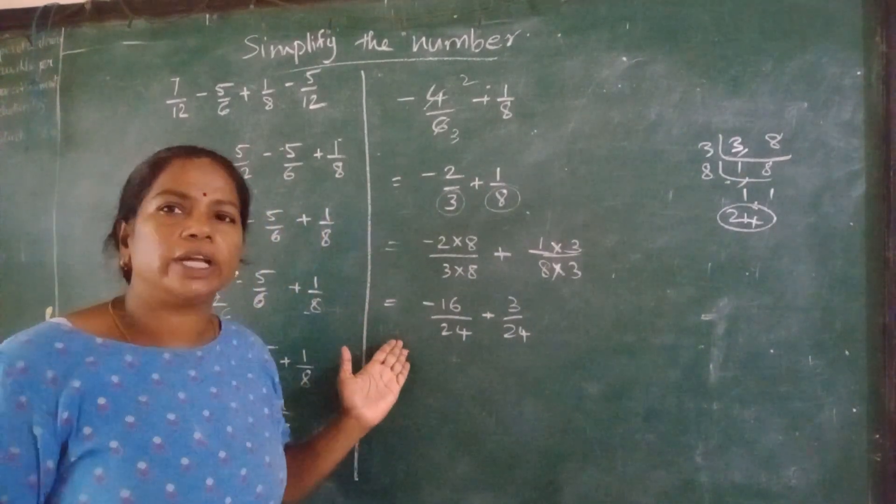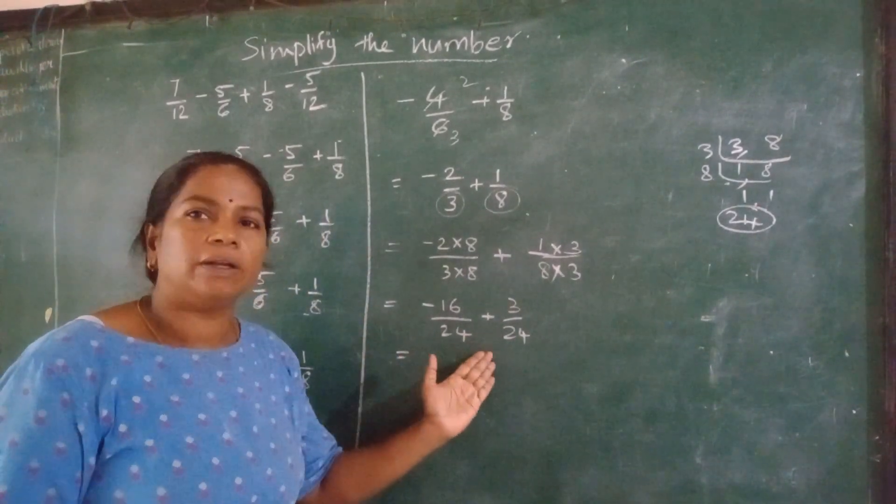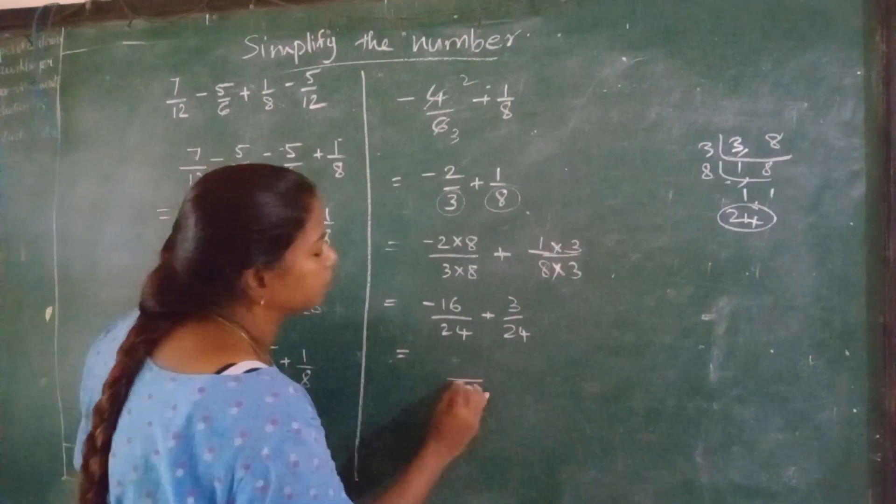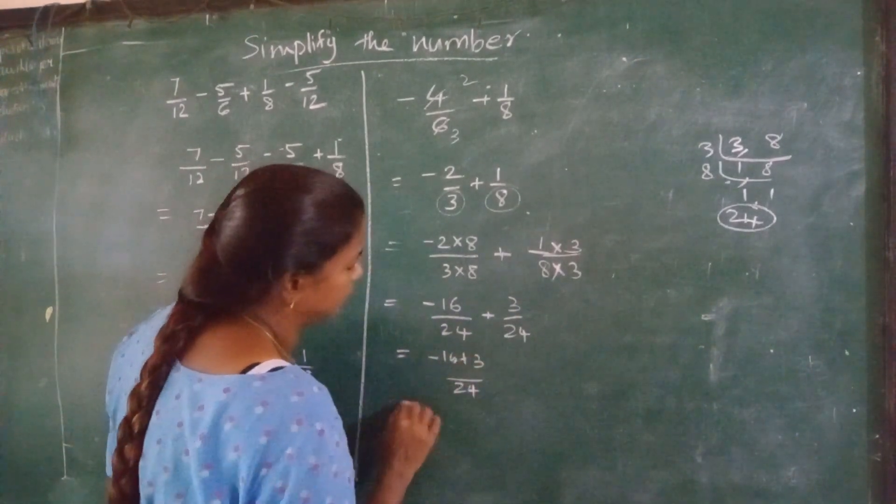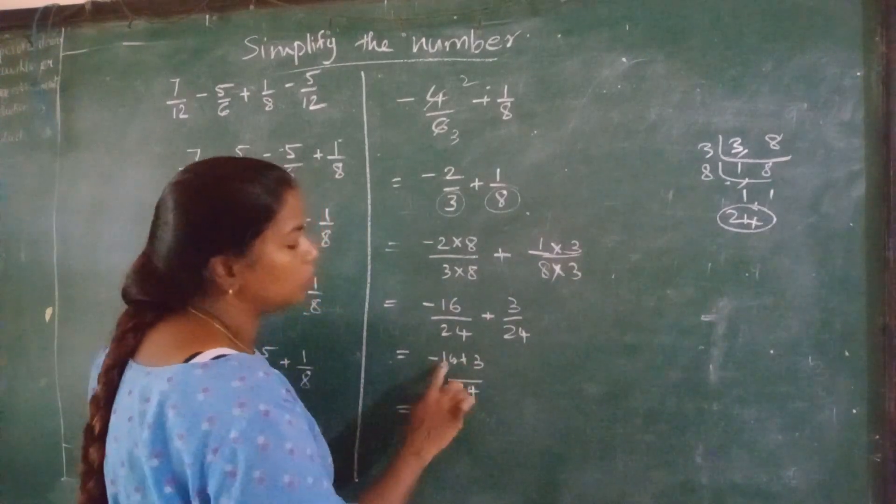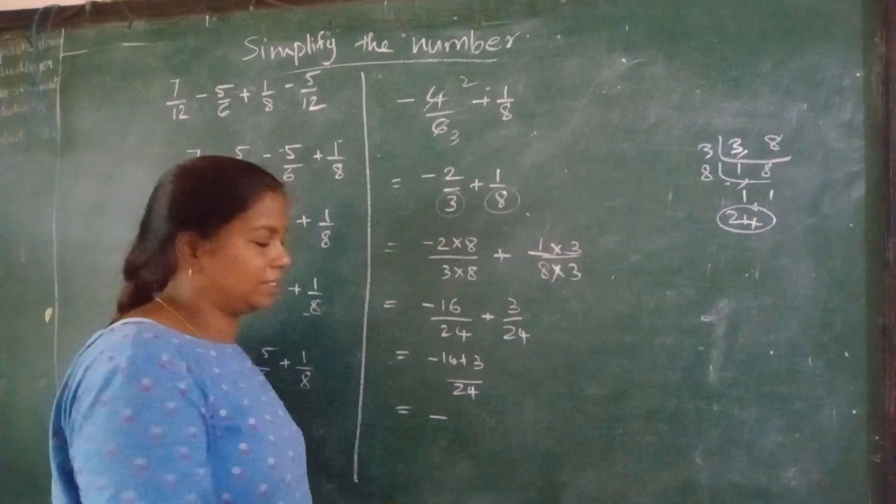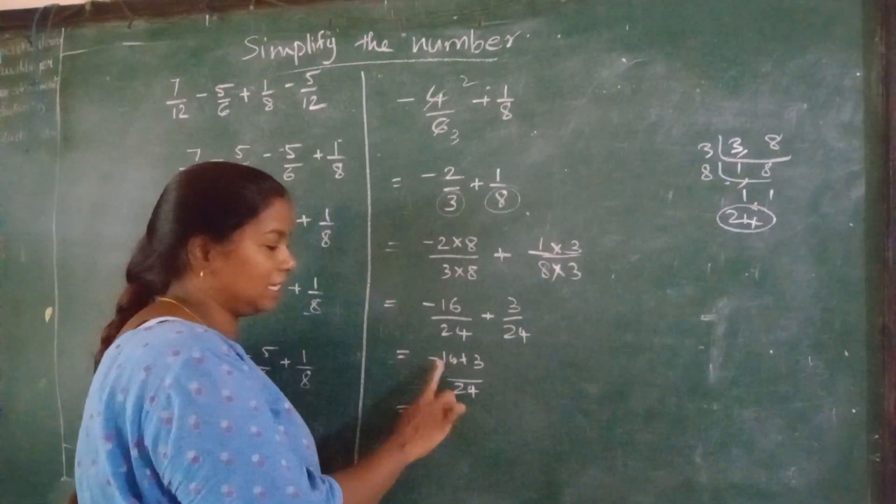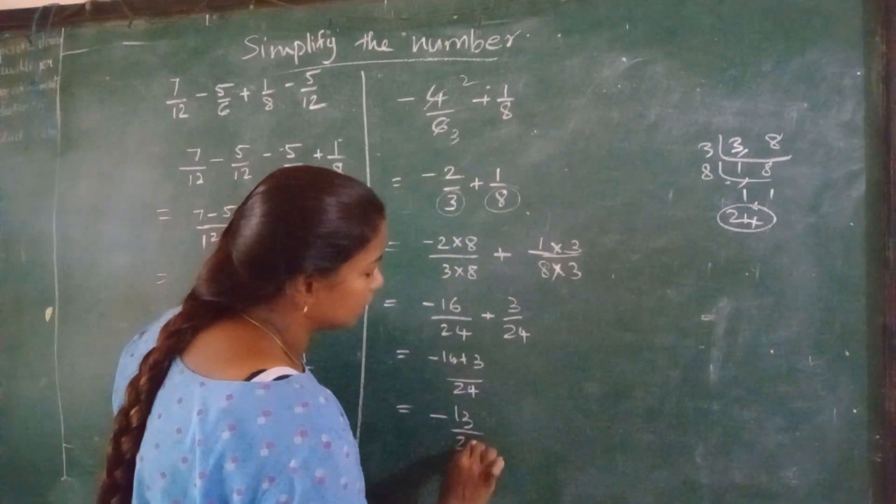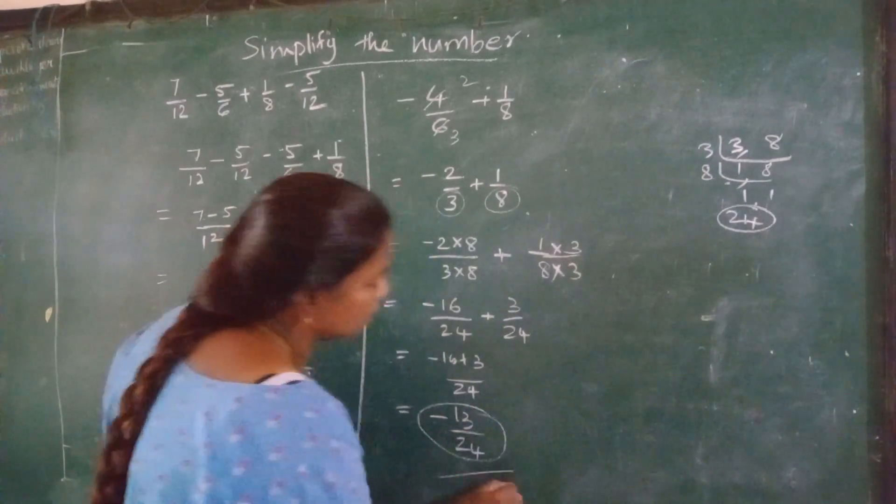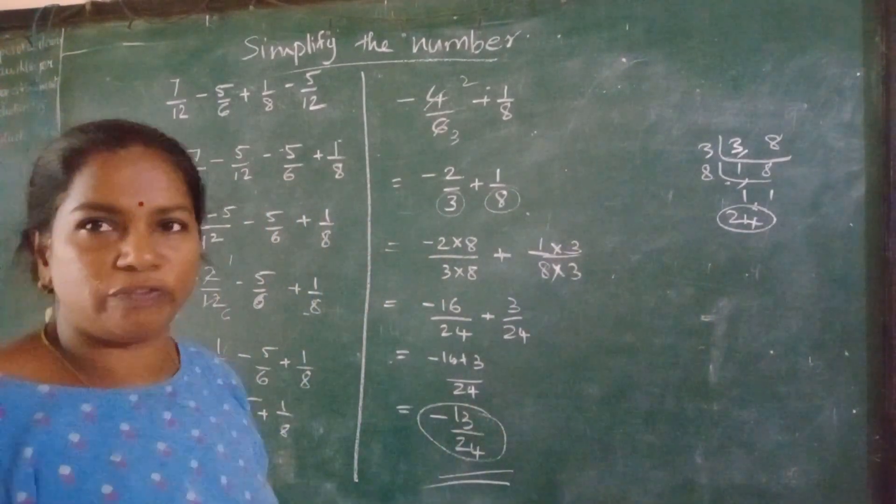Now what I have to do? I have made the denominator common. 24, minus 16 plus 3. The answer is when two different signs come, put the greater number sign. Greater number is 16. The sign is minus. 16 minus 3 is 13. So the answer is minus 13 upon 24.